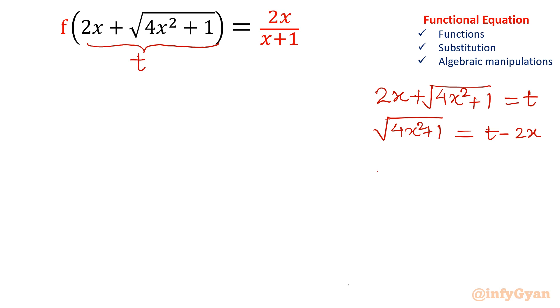So how I will substitute x in terms of t, so that I can put in the right hand side. The purpose is this x square should be eliminated otherwise we cannot find out. So let us take the square both sides. So let me write there 4x square plus 1 whole square equal to t minus 2x whole square.